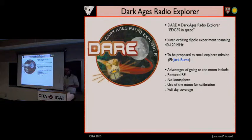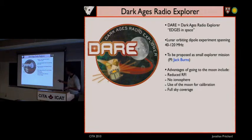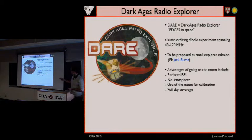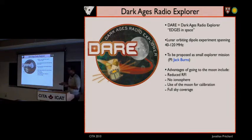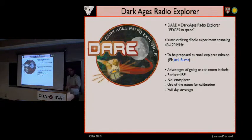There's a lot of effort on the ground for doing this, and one can also think of going into space. We have a proposal for the Dark Ages Radio Explorer (DARE). This is essentially the EDGES experiment in space, orbiting the moon — just a simple dipole experiment. When you're on the far side of the moon, you block out radio interference from the Earth. There's no ionosphere to worry about, you can look at the moon to calibrate your signal, and you can look at the full sky. That's kind of a fun thing to think about.